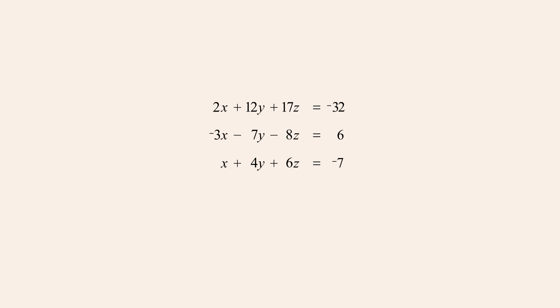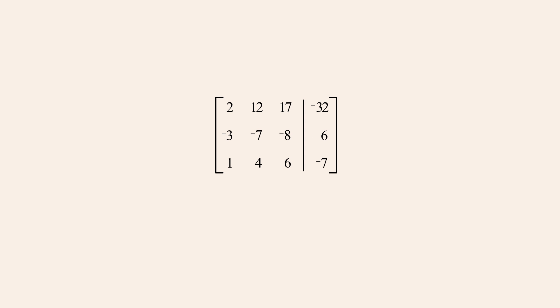In the last lecture we started with a system of linear equations which we wished to solve and represented this system as an augmented matrix. Then, we used the elementary row operations swap, scale, and pivot to reduce this matrix to row echelon form, assuring that the leading entry of each row was a 1 and that the entries below those leading entries were 0s. To further reduce this matrix to reduced row echelon form we must now continue to use row operations to change the coefficient entries above those leading entries to 0s. This can be accomplished using only pivot operations.